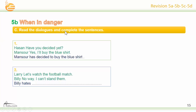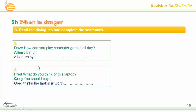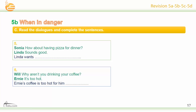Read the dialogues and complete the sentences. Number one is an example. Number two: Billy hates watching football matches. Number three: Albert enjoys playing computer games all day. Number four: Greg thinks the laptop is worth buying. Number five: Linda wants to have pizza for dinner. Number six: Ernest's coffee is too hot for him to drink.